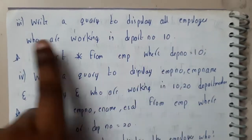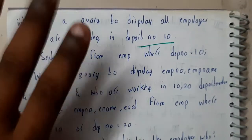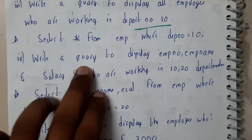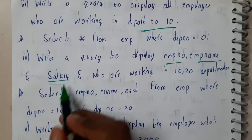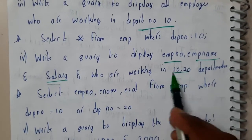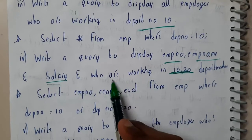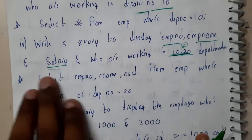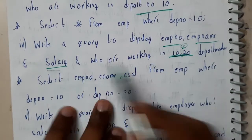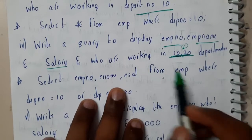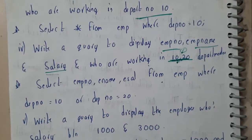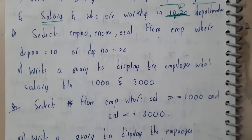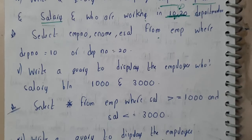Third: write a query to display all employees working in department 10 — SELECT * FROM emp WHERE department_number = 10. Fourth: display employee number, employee name, and salary for employees working in department 10 or 20 — SELECT employee_number, employee_name, salary FROM emp WHERE department_number = 10 OR department_number = 20.